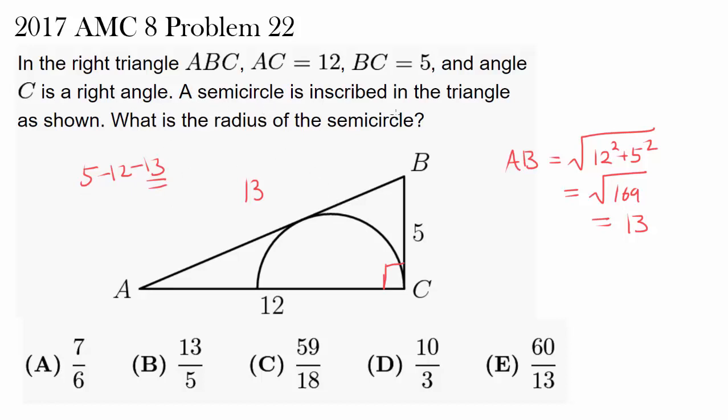A semicircle is inscribed in the triangle as shown. We see the semicircle inside, and we wish to find the radius of the semicircle, this radius R.